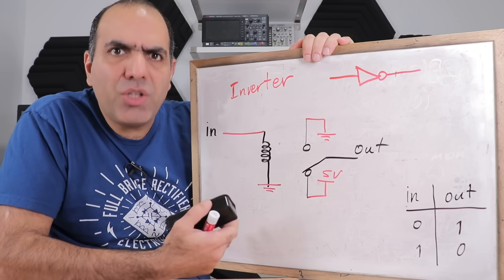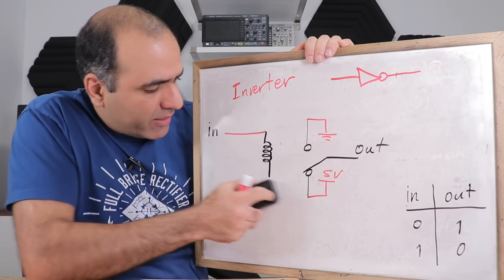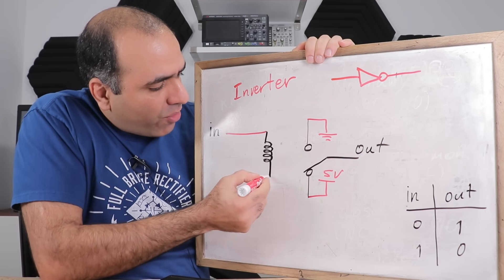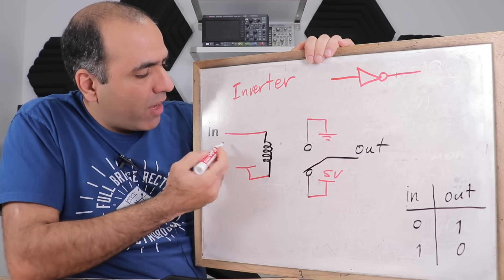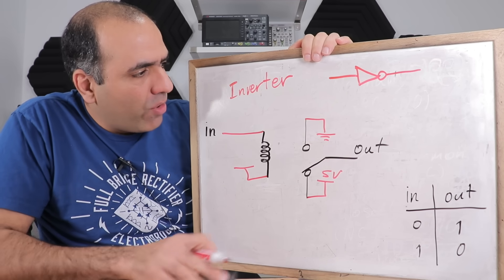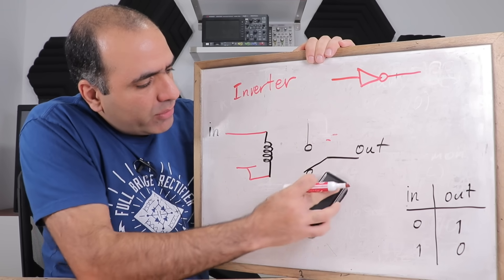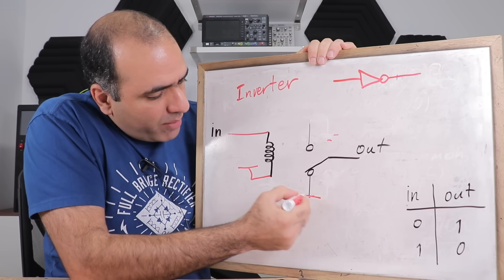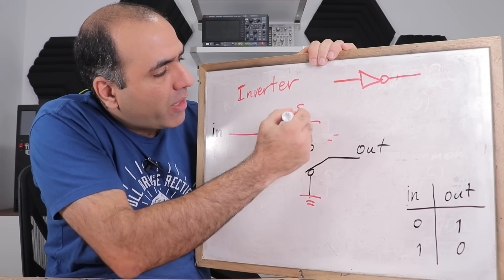The cool thing about the relay is that if I need to invert the input, I don't need to add another inverter. I simply connect the coil to power and now the coil is on when the signal is low. Or I could flip the power and ground connection on the switch side. This is also an inverter.